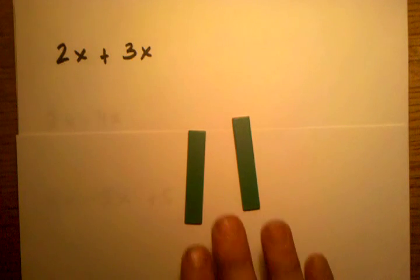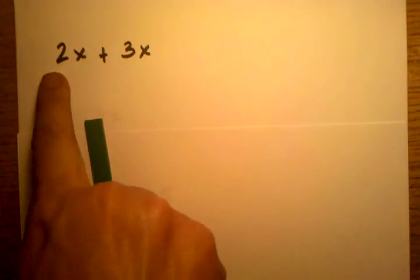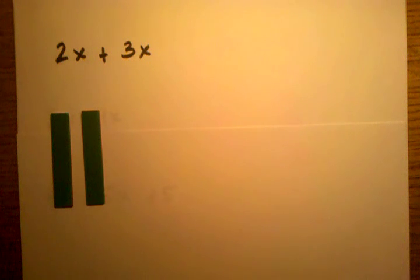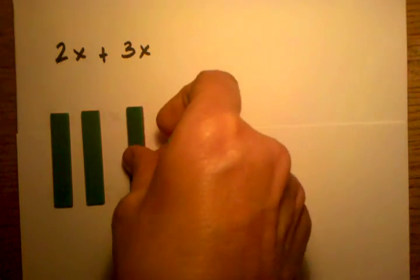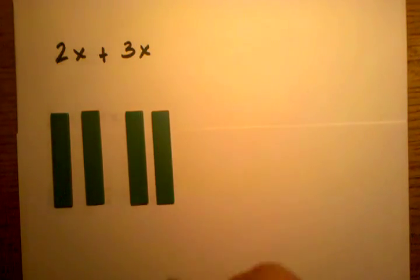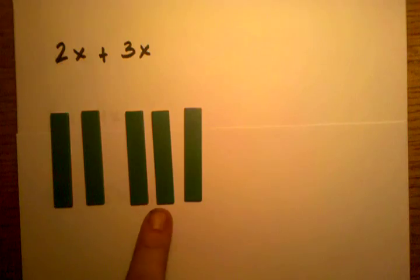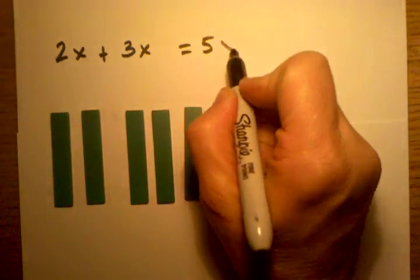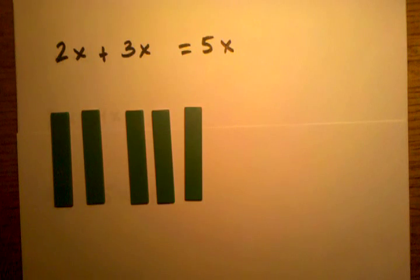Second of all, it's telling us that in the beginning of this problem, I have two x's. This is one way I can just show two x's. Now I need to add to this pile of two x's, I need to add three more x's. And then 2x plus 3x gets me a total of one, two, three, four, five x's. So the answer to this, as we can see from the algebra tiles, is 5x.